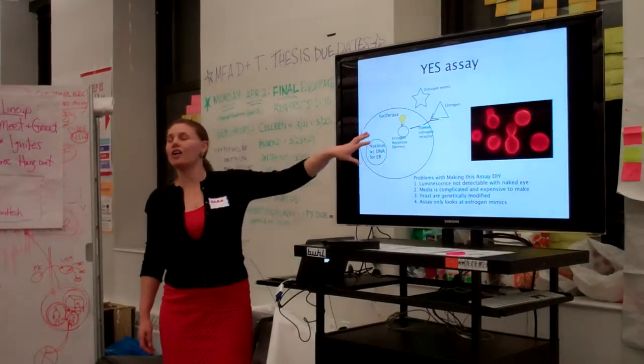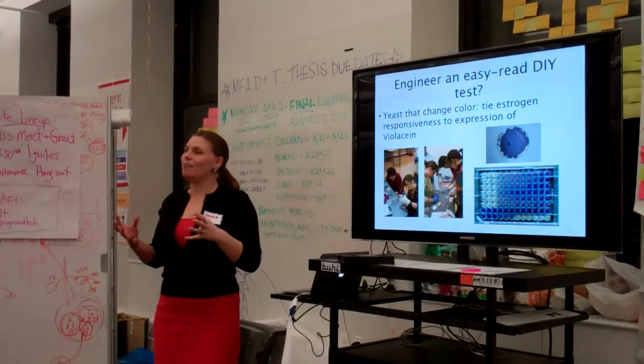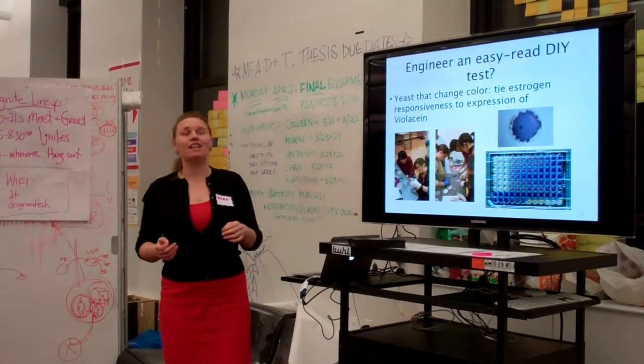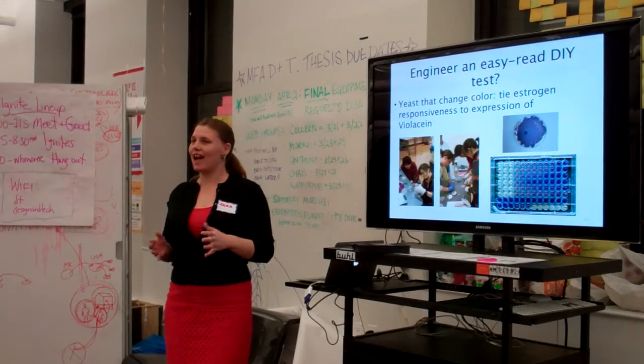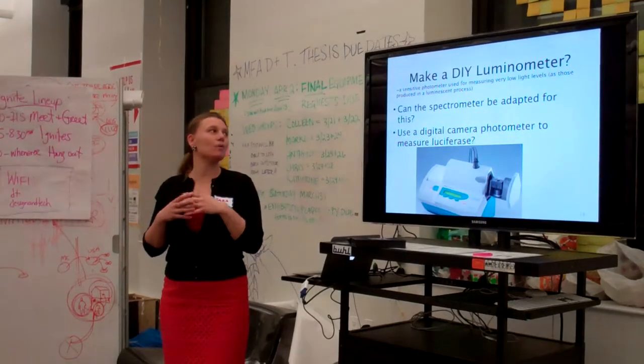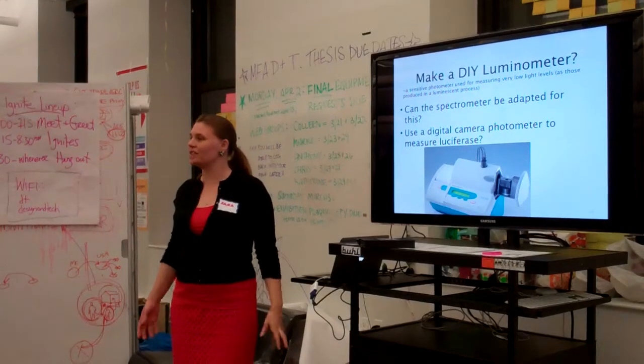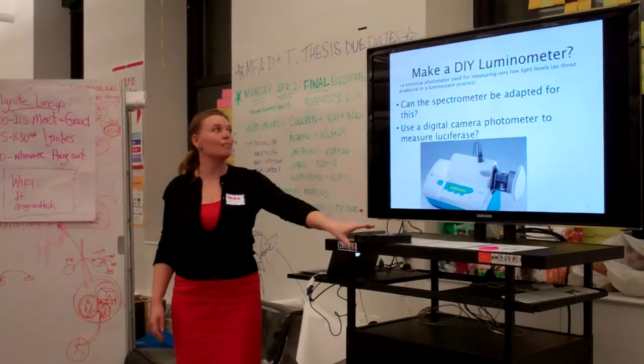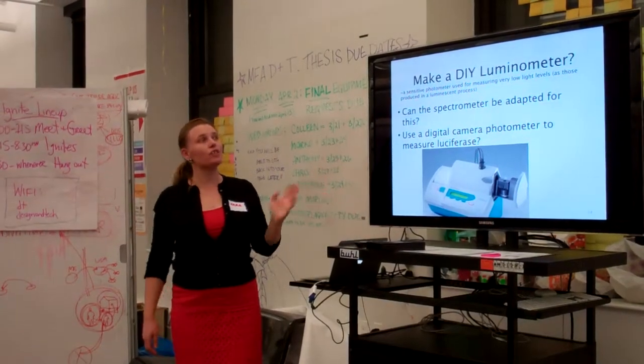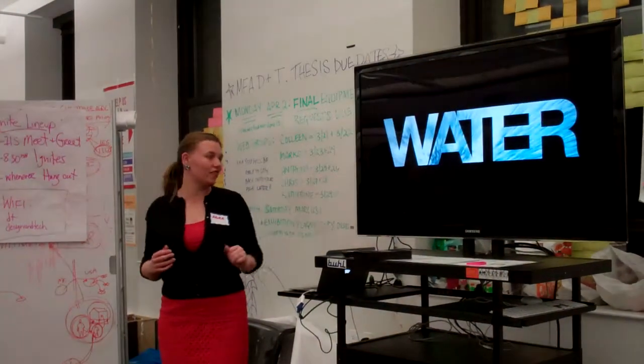We're working on a yeast estrogen screen, where basically it's a genetically modified yeast that responds to estrogens in the environment by glowing. There are two problems with the assay right now—the glowing is too faint to see with the naked eye. So we want to create a DIY luminometer. That's another project on the table this weekend, thinking about how to maybe use the spectrometer to capture the fluorescence from these yeasts. The other project is trying to hack the yeast to give them a pigment color.